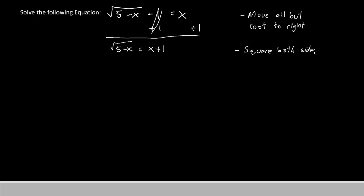The reason why we square both sides is to remove the square root. Now, if we square both sides, we'll have root of 5 minus x, the quantity squared, equals x plus 1, the quantity squared.